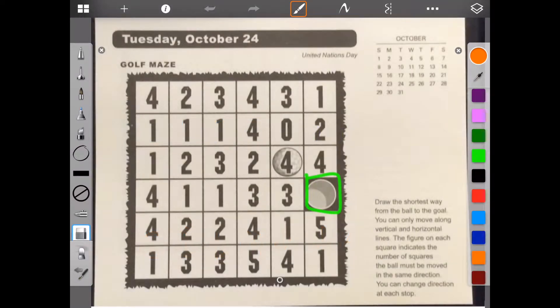Hello, welcome to Brain Games Calendar 2017. We're in week 43, day 2. We have golf maze. Let's begin. Draw the shortest way from the ball to the goal. You can only move along vertical and horizontal lines. The figure in each square indicates the number of squares the ball must be moved in the same direction. You can change direction at each stop. This time we are really lucky because we only have one direction to start in since the number is 4.